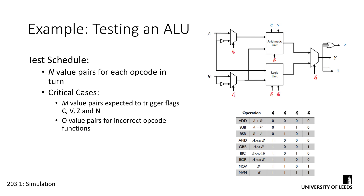If we were to make the jump to a 16-bit ALU, however, we'd be looking at 22 years to test everything. So in that situation, doing some constrained random testing would definitely be the better option.